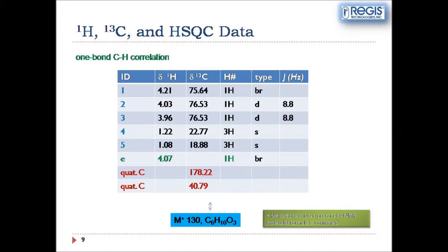So far the molecular structure is completely supported by those data. We can also see that we have quaternary carbons and an exchangeable proton. And then we go to the next step, analyzing the COSY data.